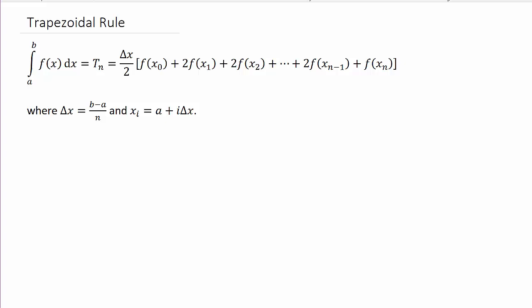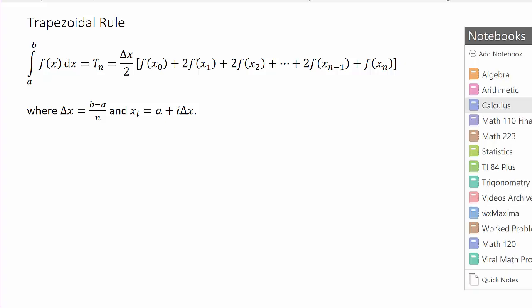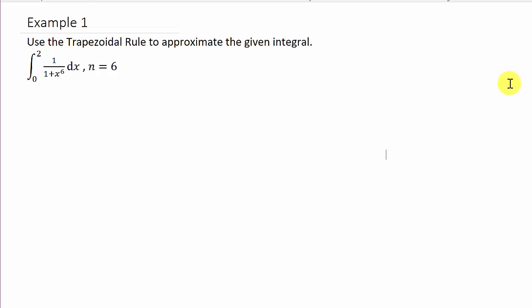Alright, so let's look at our example. So, the first thing that we want to do is we want to find delta x. So, delta x is equal to b minus a, so that's 2 minus 0, over n. And they give us n is equal to 6. And so, that'll give us 1 third.